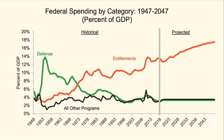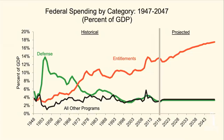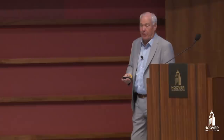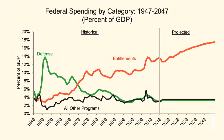Defense spending has been heading steadily down over six decades. The humps correspond to the Korean War in the 1950s, Vietnam in the 60s, the Reagan defense buildup in the 80s, and the Afghanistan and Iraq wars. These are modest costs relative to GDP compared to entitlement growth. You could double the defense budget — which nobody is talking about — and defense expenditures would still be only half of entitlement spending. The culprit has always been, and will be in the future, entitlement programs.